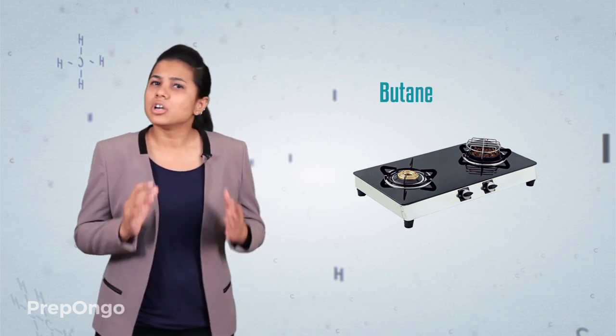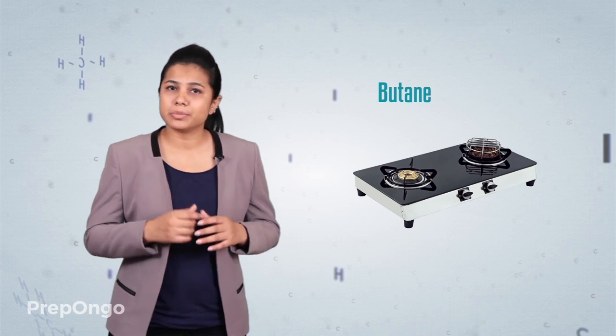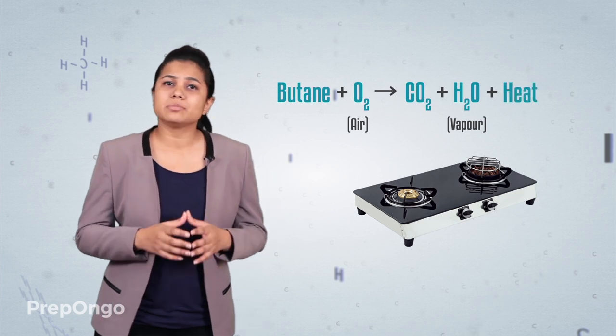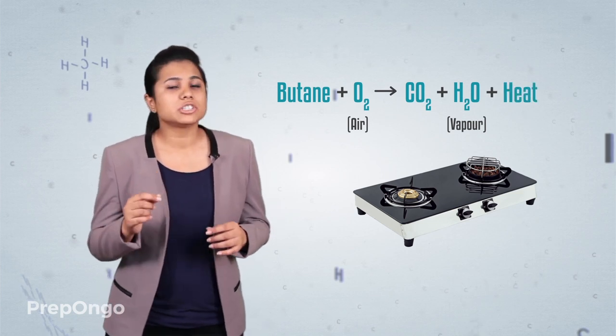All of us use LPG in our kitchen for cooking our food. LPG comprises of carbon compounds, mostly butane, which when burnt in air forms carbon dioxide and water vapor. A large amount of heat is generated which is utilized for cooking our food. In simple words, it is simply a process of combustion of butane to form carbon dioxide and water.